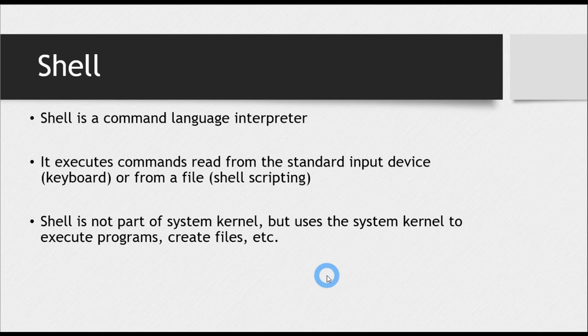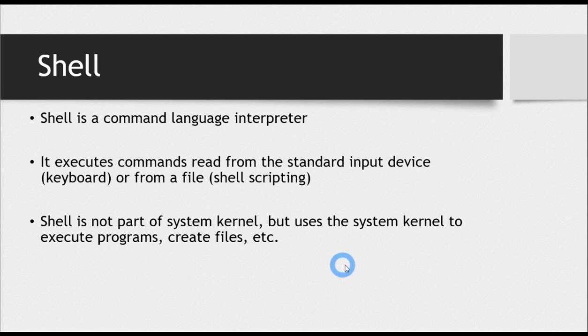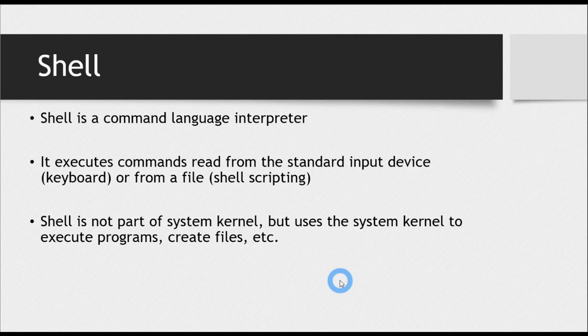Shell is a command language interpreter. You all know that the language of computer is zeros and ones, and it is very difficult for us to talk to the computer in that language. So you can think of shell as a special program in the operating system which accepts your commands, instructions, or code, which are mostly in English language. If those commands or code is valid, it is passed to the kernel. Shell acts as a translator which translates your commands and code into the language of the computer — in other words, it is an interpreter. It executes commands that it reads from the keyboard or from a file.